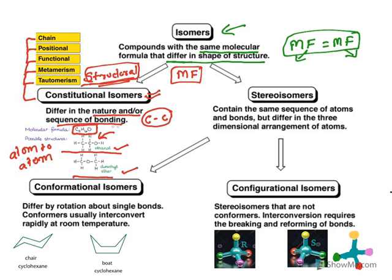There are many types of constitutional isomers. Chain isomers differ in the chain. Positional isomers — for example, taking a chloro substitution on butane, the chlorine could be on the first carbon or the second carbon, giving 1-chlorobutane or 2-chlorobutane. The molecular formulas are same but the position is different. Similarly there are functional isomers, and metamerism and tautomerism are also types of constitutional isomers.